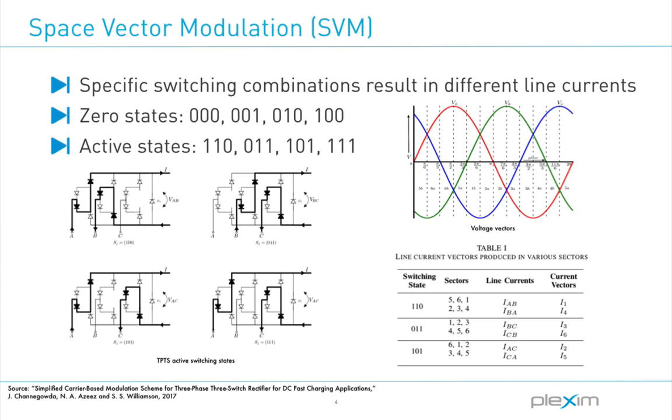and active states, displayed on the bottom here, when two or more switches are on. The corresponding line currents are highlighted here.